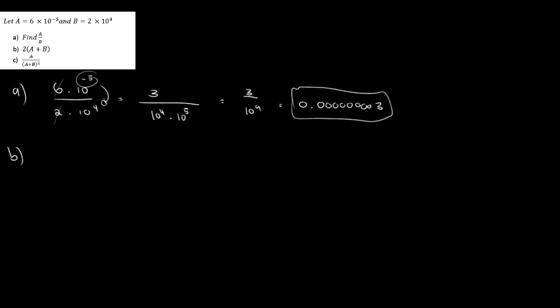So this would be my final answer. Let's move over to B. B says 2 multiplied 6 times 10 to the power of negative 5, plus 2 multiplied 10 to the power of 4.